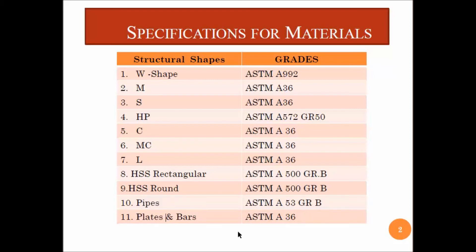These are the different structural members and their grades. For W shape we use ASTM A992. For M section we use ASTM A36. For S section we use A36. For HP we use ASTM A572 Grade 50. For channels and miscellaneous channels we use ASTM A36. For angles we use ASTM A36. For HSS rectangular and HSS round we use ASTM A500 Grade B. For pipes we use ASTM A53 Grade B, and for plates and bars we use ASTM A36.